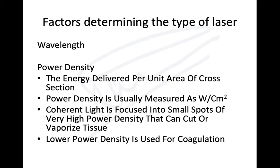What determines the type of laser? One thing is wavelength — each laser has a specific wavelength. The other is power density, which is the energy delivered per unit area of cross section, measured in watts per centimeter squared. How powerful a laser is depends on its power density.